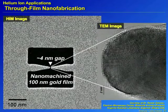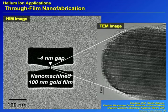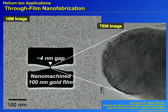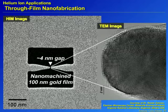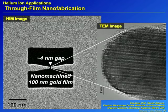A growing number of examples in the literature show the use of helium and neon for through-film nanofabrication. Work done jointly between the Zeiss Applications Lab and Dr. Nestor Zaluzic at Argonne National Lab involved a 100 nanometer gold film nanomachined in about two minutes to create a four nanometer electrode gap. TEM lattice imaging at Argonne showed the gold lattice very well preserved — very little sign of disruption by the helium beam — which is very promising for high-fidelity nanomachining with minimal disruption to the matrix.